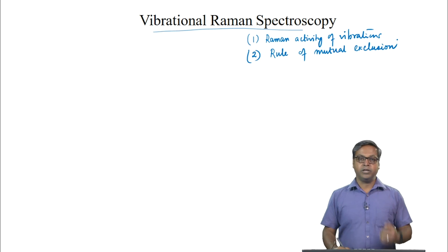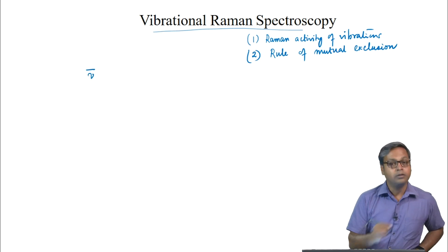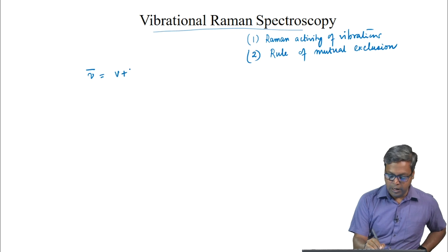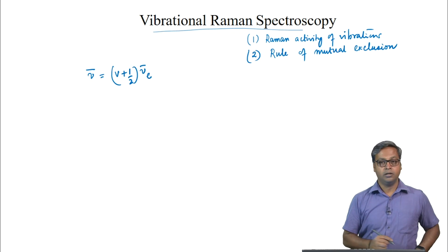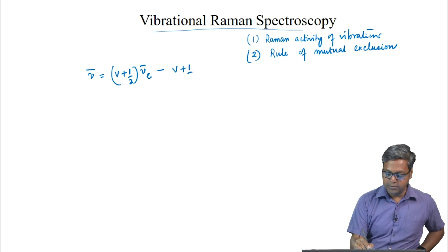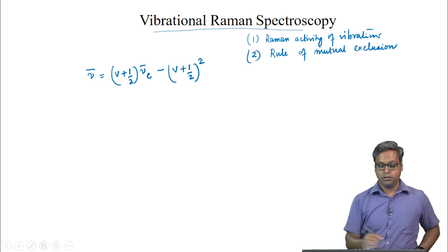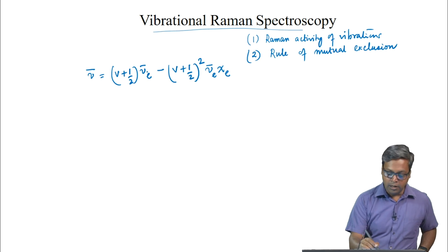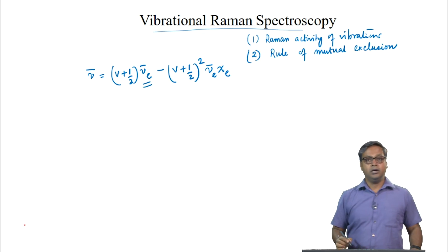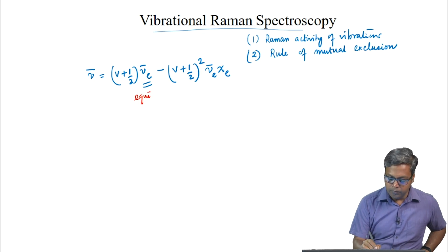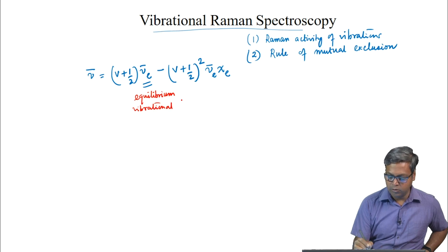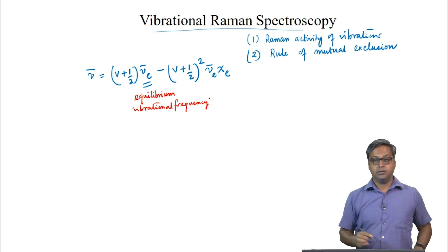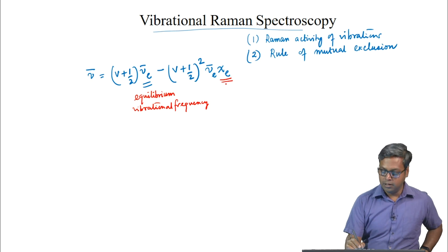For every vibrational mode, we can write the energy expression in the form: nu-bar equals (V + 1/2) * nu-bar_E minus (V + 1/2)^2 * nu-bar_E * chi_E, where nu-bar_E is the equilibrium vibrational frequency and chi_E is the anharmonicity.